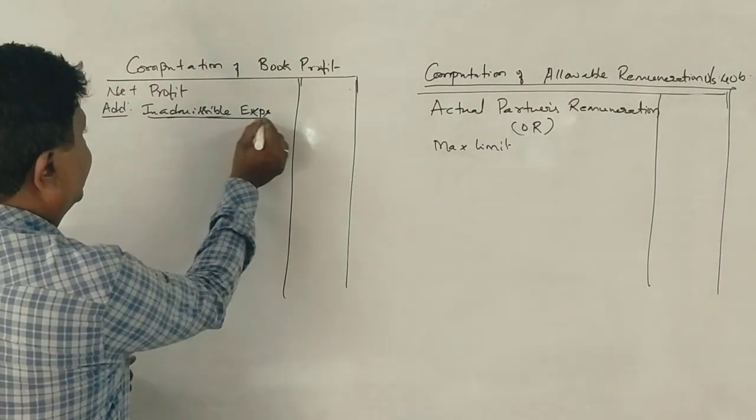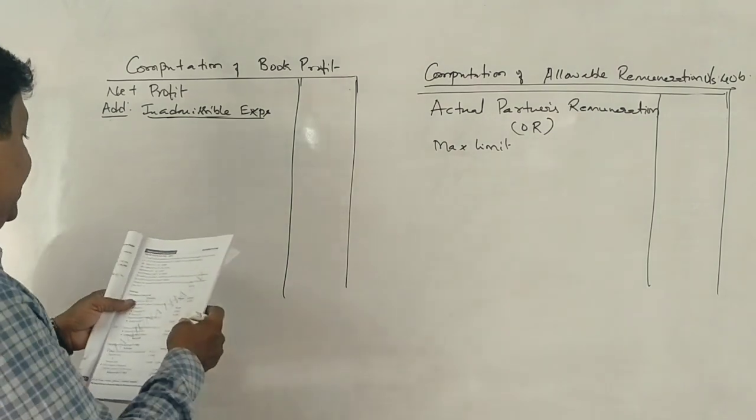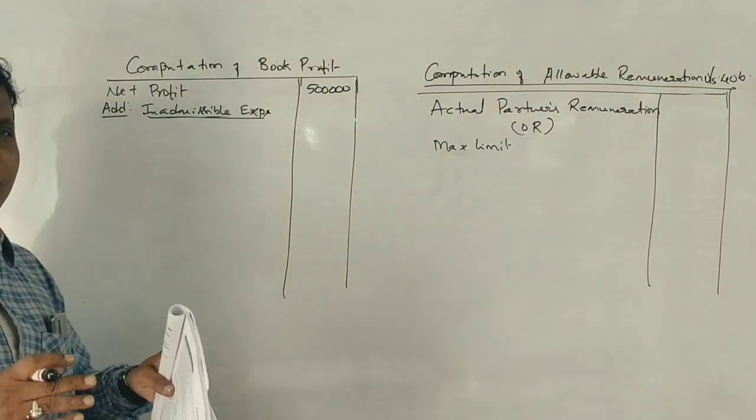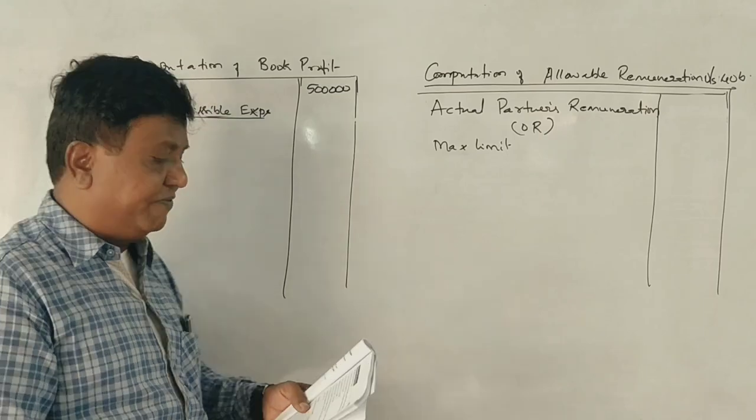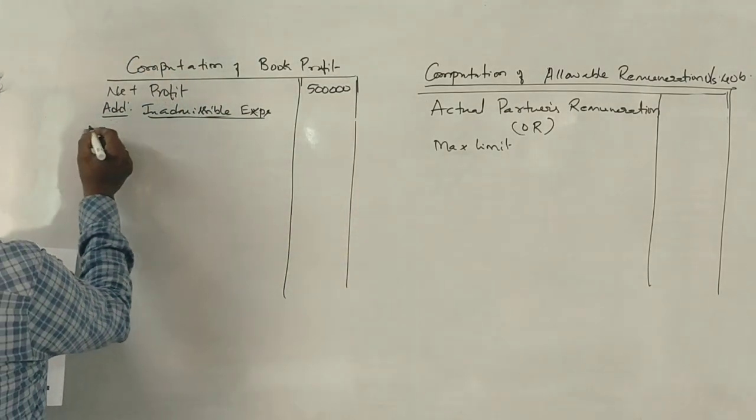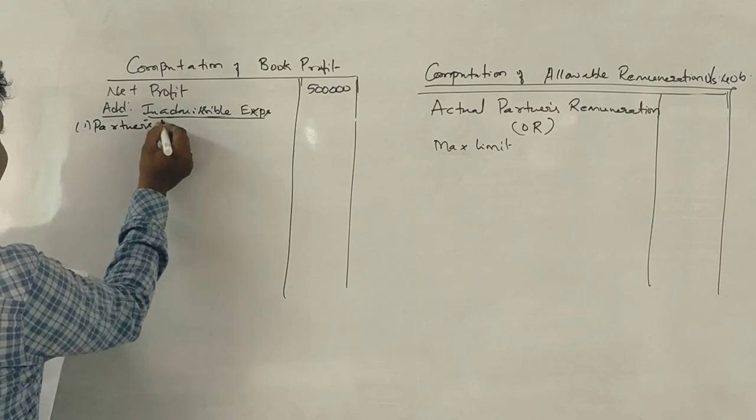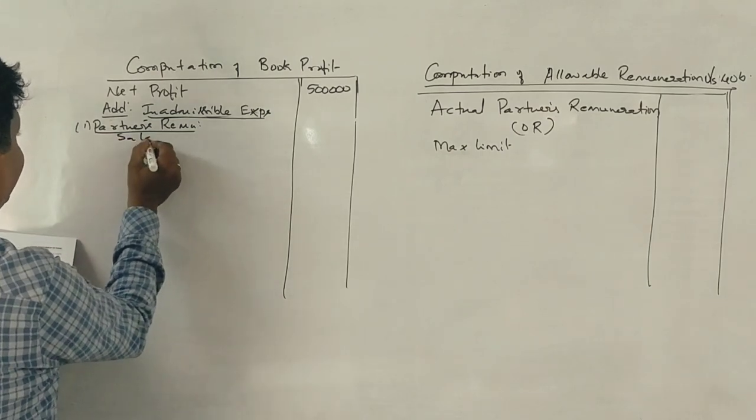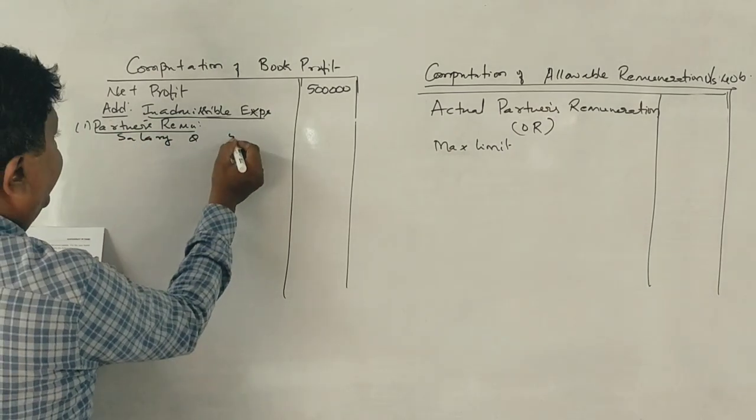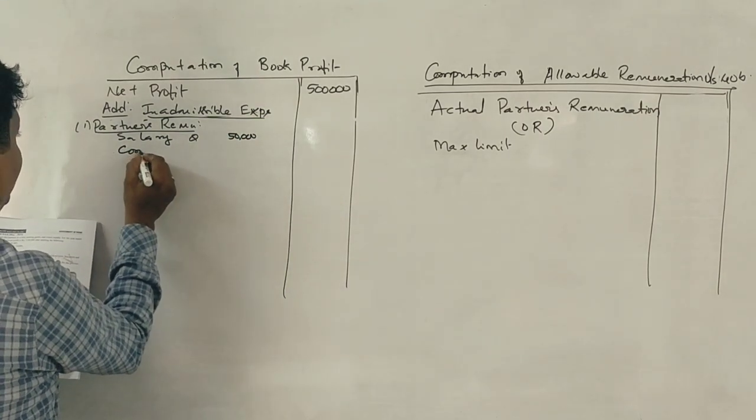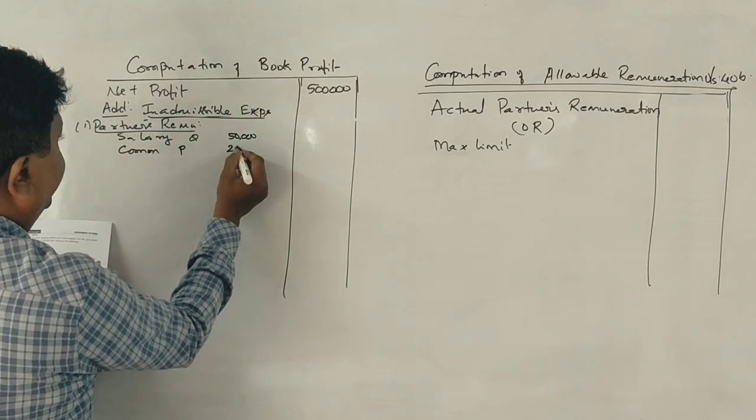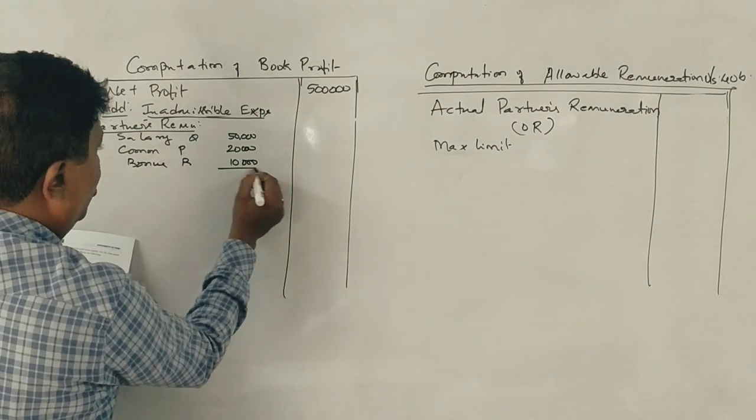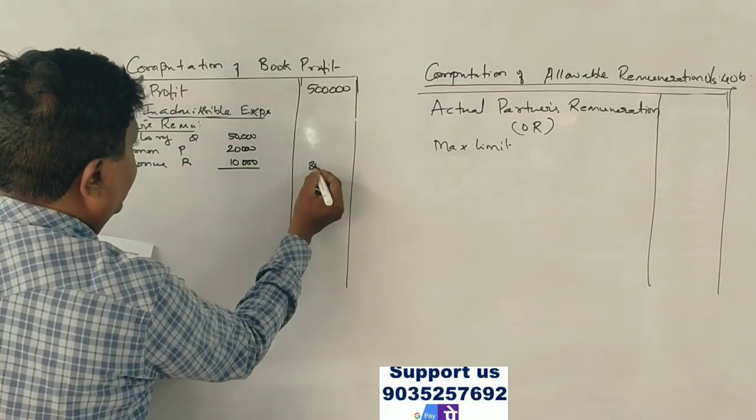This is the first net profit. Net profit is 5 lakh. Partners remuneration - Q has got a salary of 50,000 rupees, commission to P is 20,000 rupees, bonus to R is 10,000.